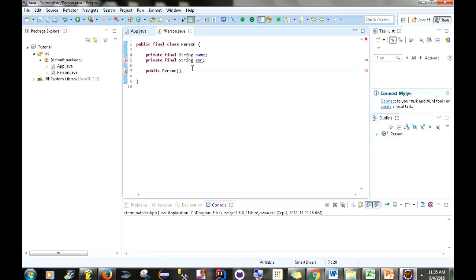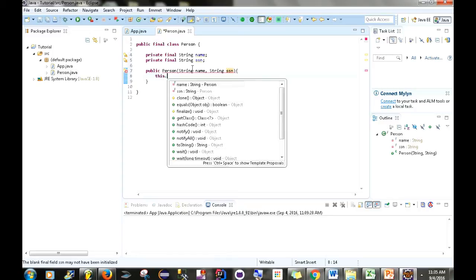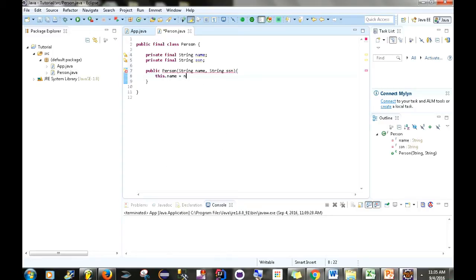Person. And then from here, I'm going to add in string name. String SSN. This.name equals name. This.SSN equals SSN.